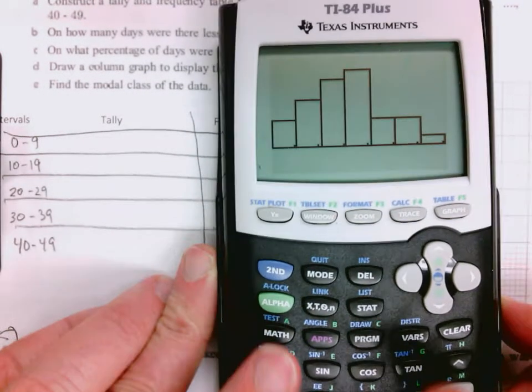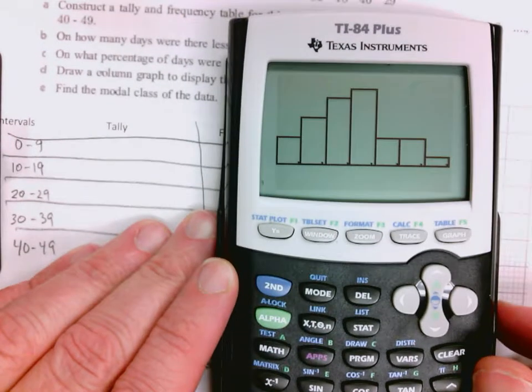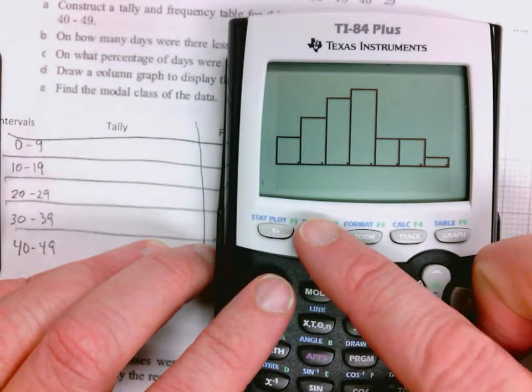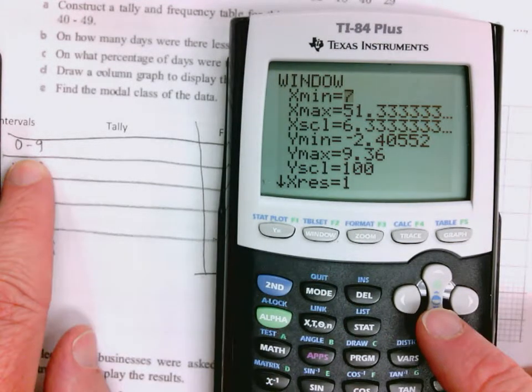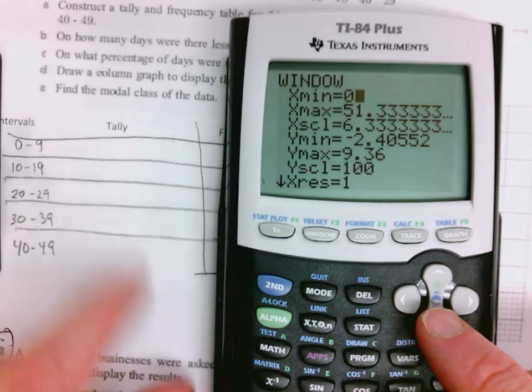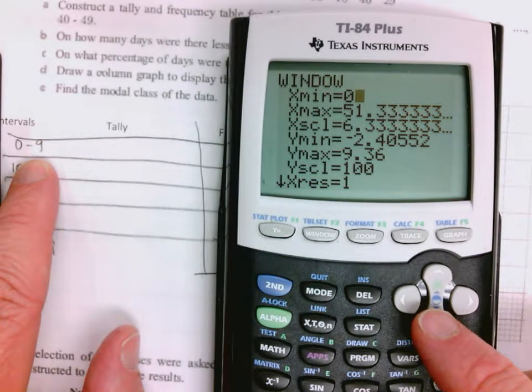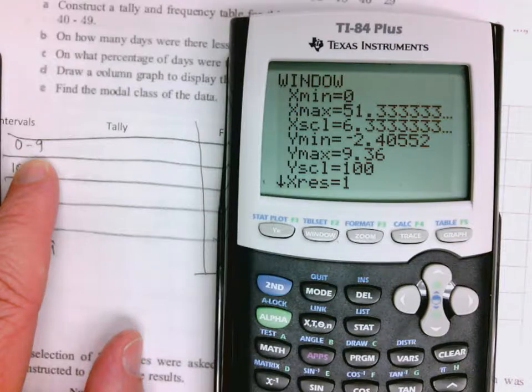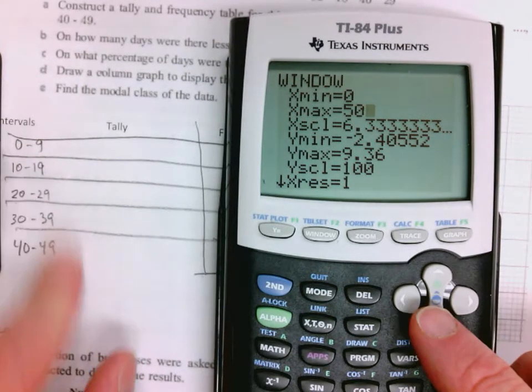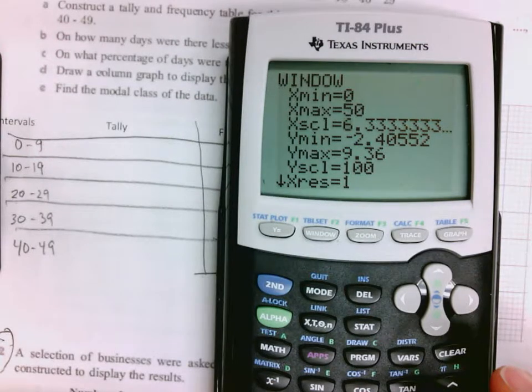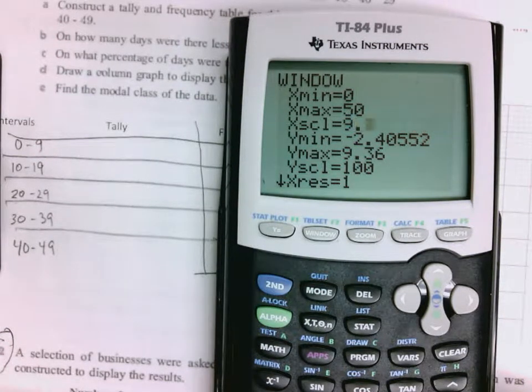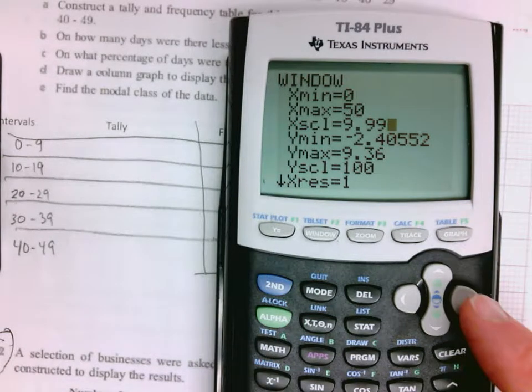If you want to know how to change this to make it match what you want, you can go to window. I want the x value to start at 0 instead of 7. The x max I'll go to 50 because I know the biggest is 49. And then the x scale, I know each interval is basically 10 wide, so I'm going to make it 9.99.